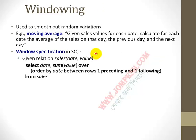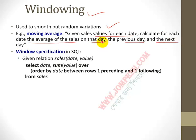Windowing is used to compute moving averages, which smooth out random variations. For example, given a sales relation with date and value, for each day calculate the average of sales on that day, the previous day, and the next day. This is used in high-level reporting. SQL windowing specification uses: sum(value) over (order by date rows between 1 preceding and 1 following) from sales.